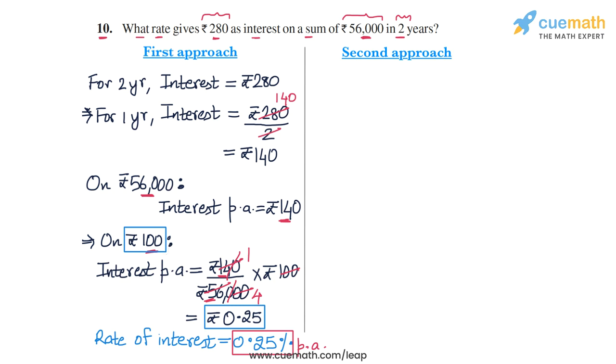Now for our second approach, we will set up an equation in the unknown, which is the rate of interest. Let's start by assuming that the rate of interest is some variable. Let's take it to be R%. So rate of interest is R%. We know that interest is given by this formula: P × R × T / 100. This is how we calculate simple interest.